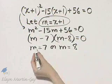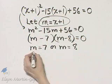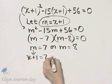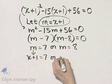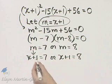Here now, instead of m, remember m was x plus 1, so instead of m, I'll now write x plus 1 is equal to 7, or instead of m, I'll write x plus 1 is equal to 8.